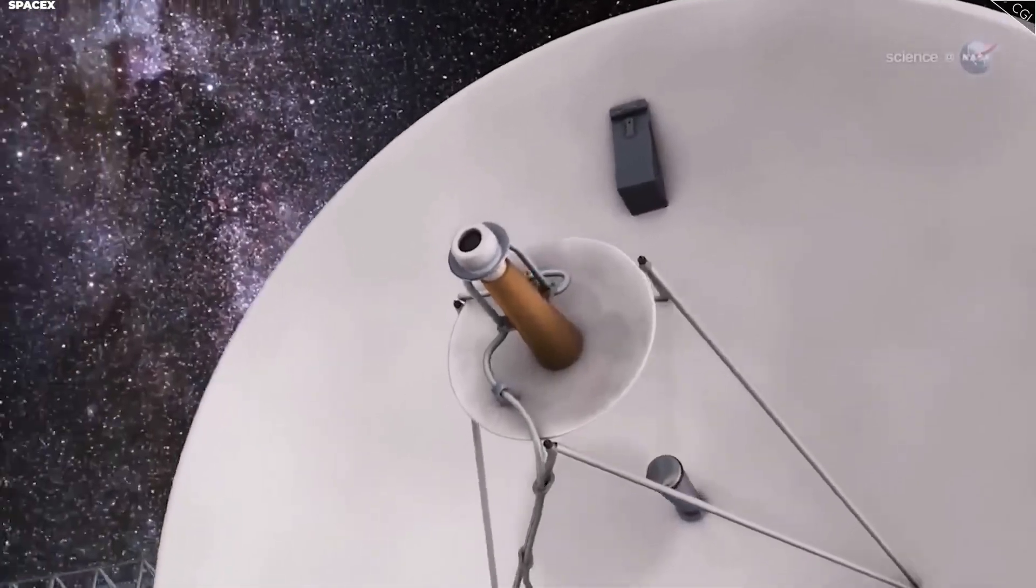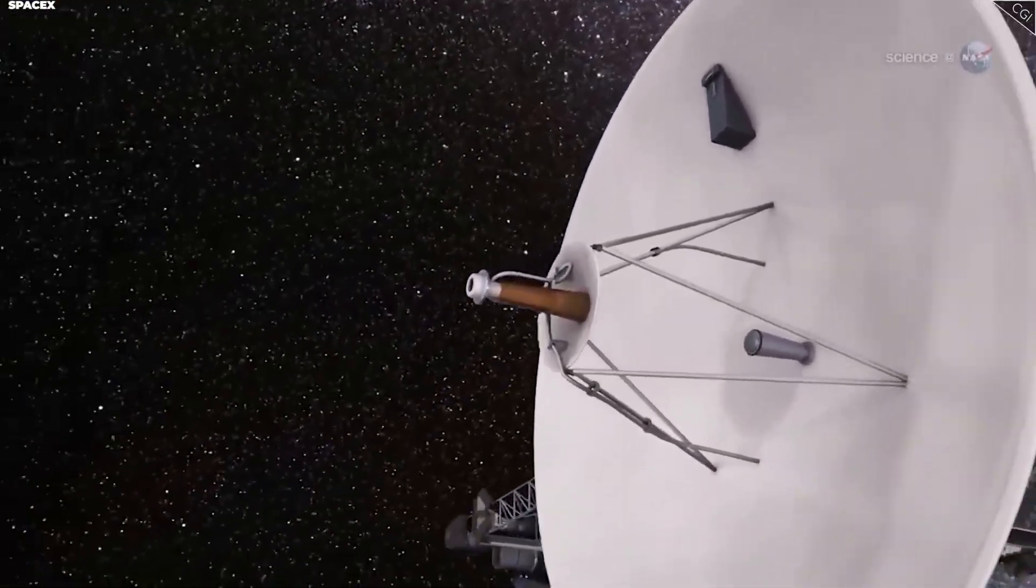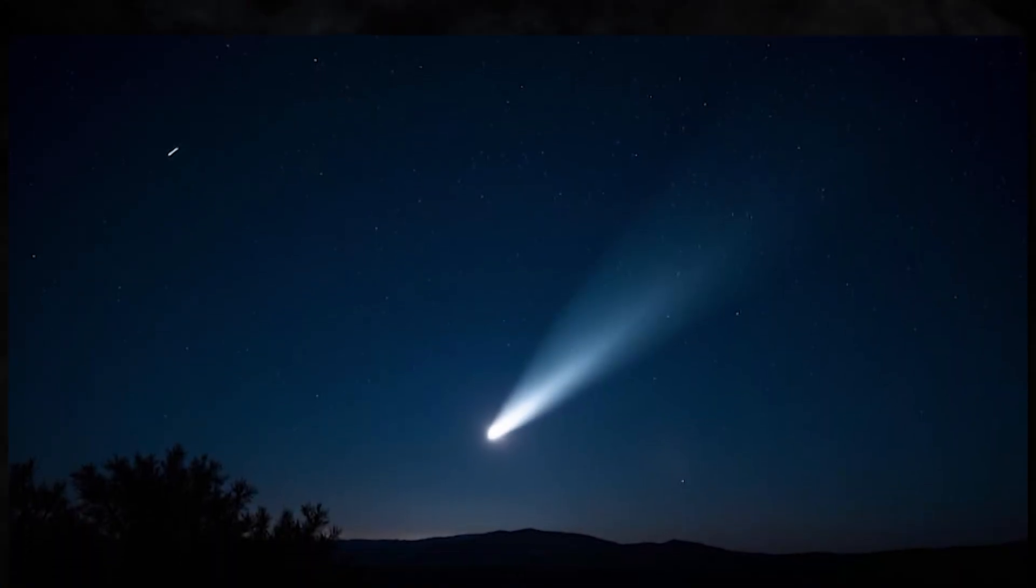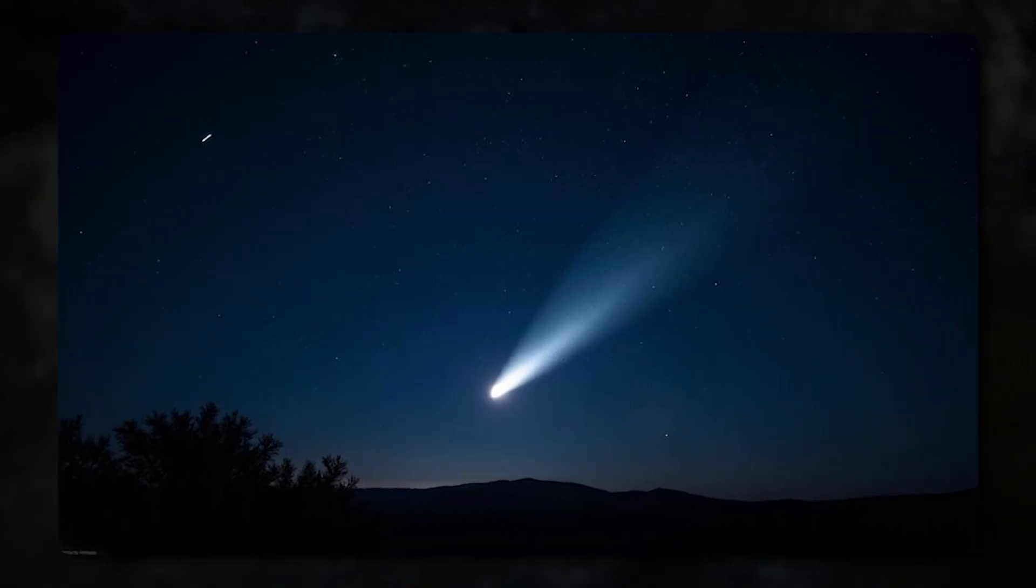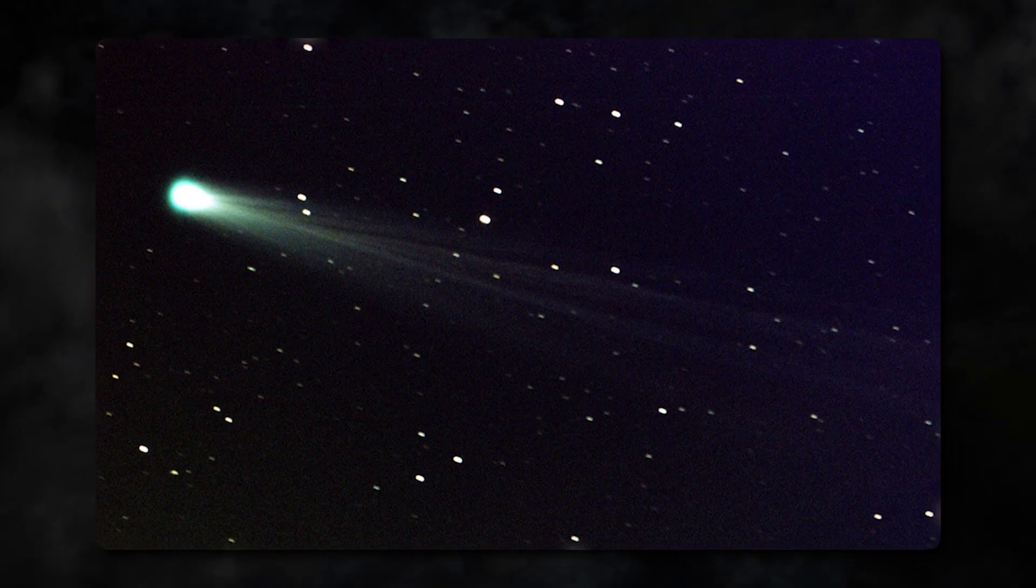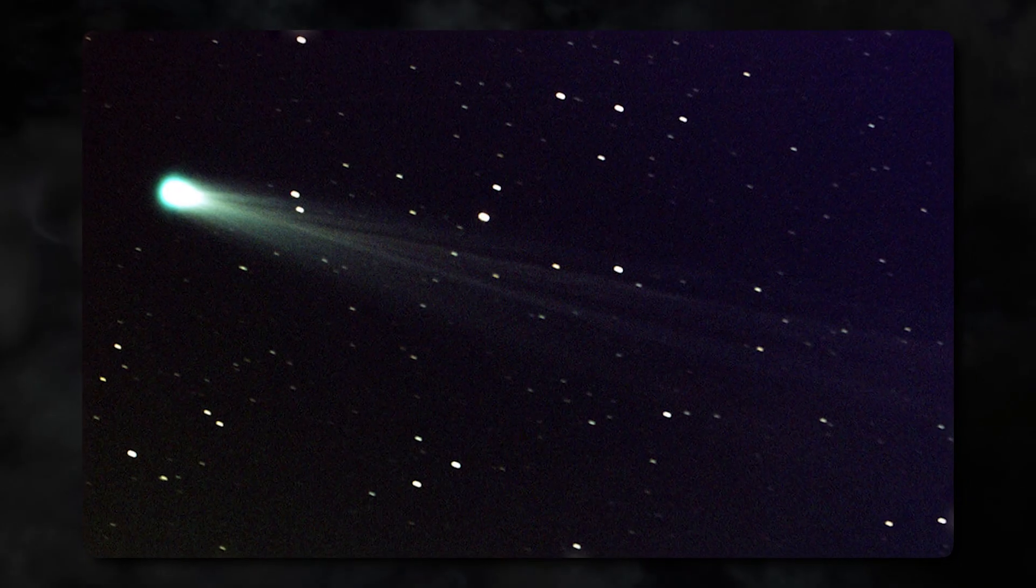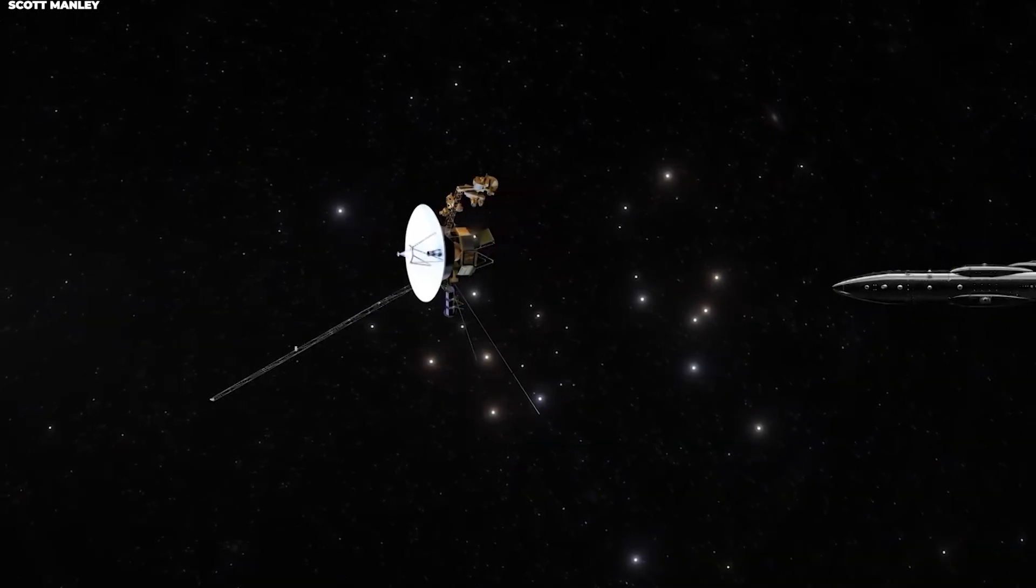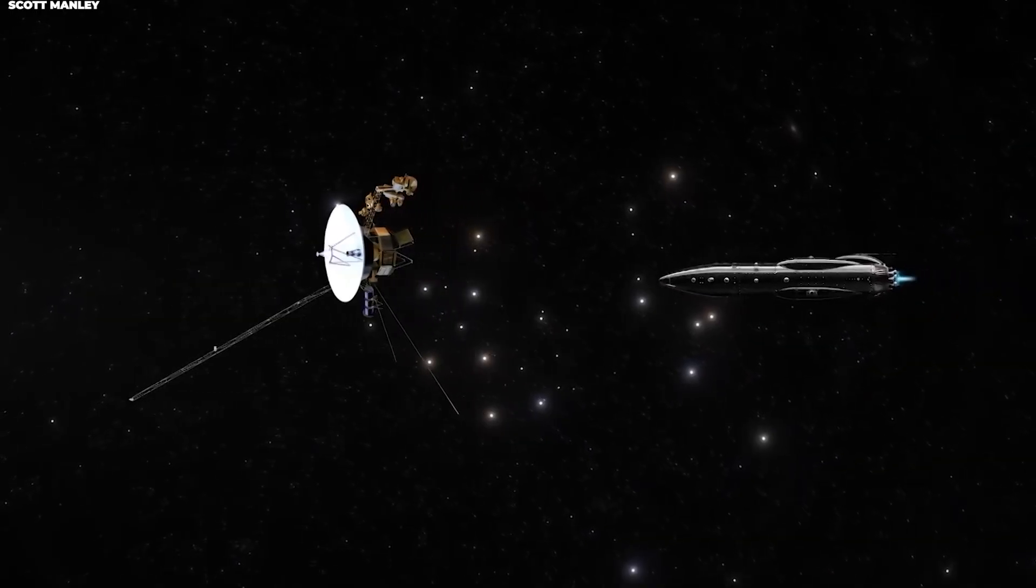So what happened when Voyager 1 attempted to intercept, or rather observe 3i-ATLAS? Here's the reality. The encounter didn't produce the dramatic results that scientists had hoped for, but it was still scientifically valuable in ways that are important to understand.